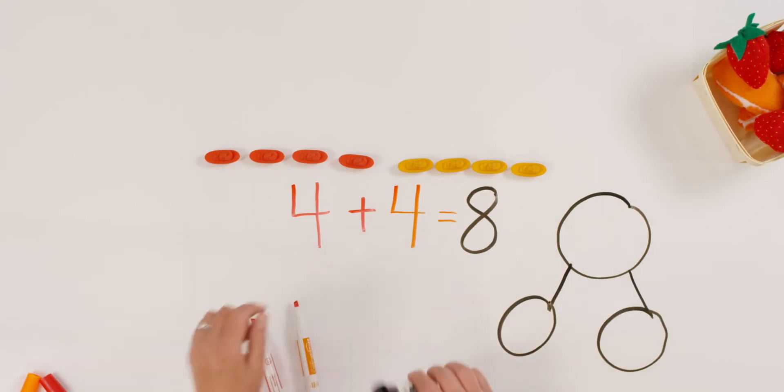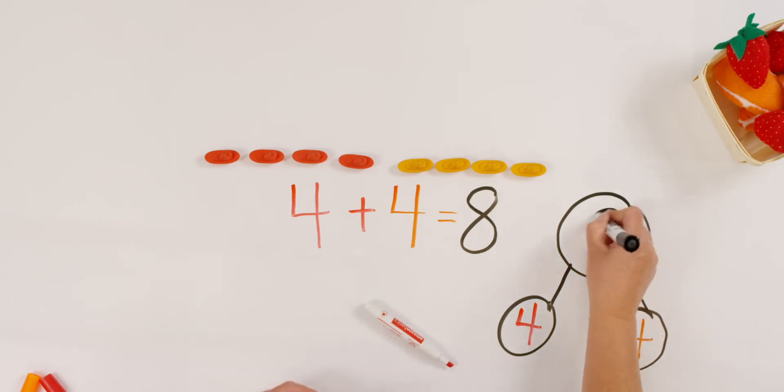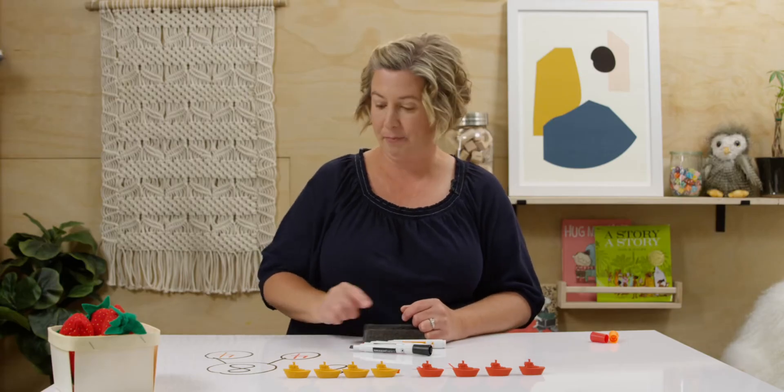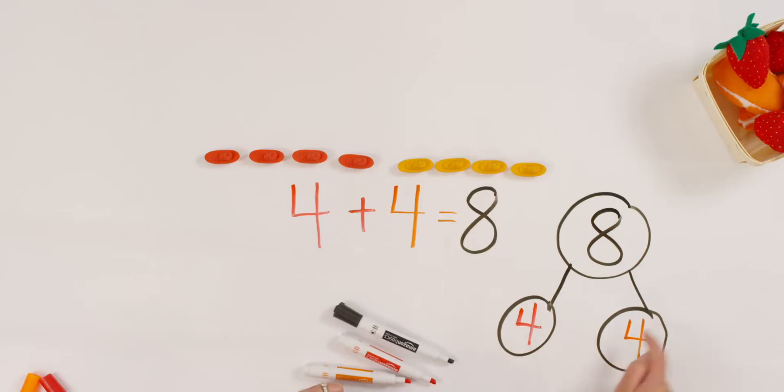How many reds do we have? Four. This time, I'm going to start here. And how many oranges were there? Four. Four and four more make how many all together? Eight. Do you see how I wrote it with the part first this time and then the whole? There's different ways to fill it in. So let's read it one more time. Four and four more make eight.